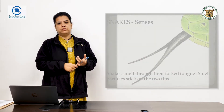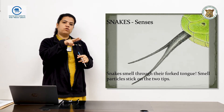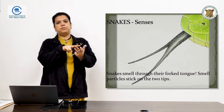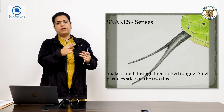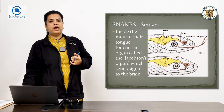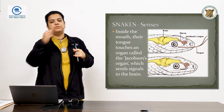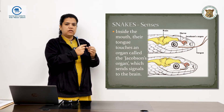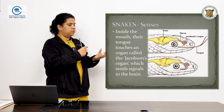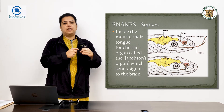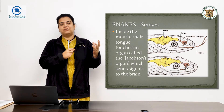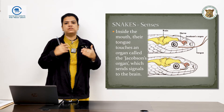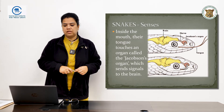Snakes sense their environment mainly by picking up chemical signals using the forked tongue. The forked tongue comes out, picks up chemical signals from the environment, and is then pushed back into the upper palate where the Jacobson's organ is located. This organ is connected to the brain and translates the chemical signals, allowing the snake to identify and assess its environment.